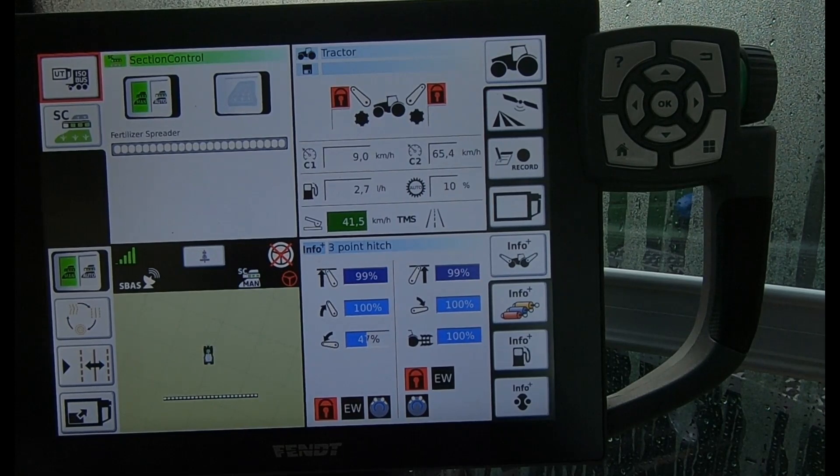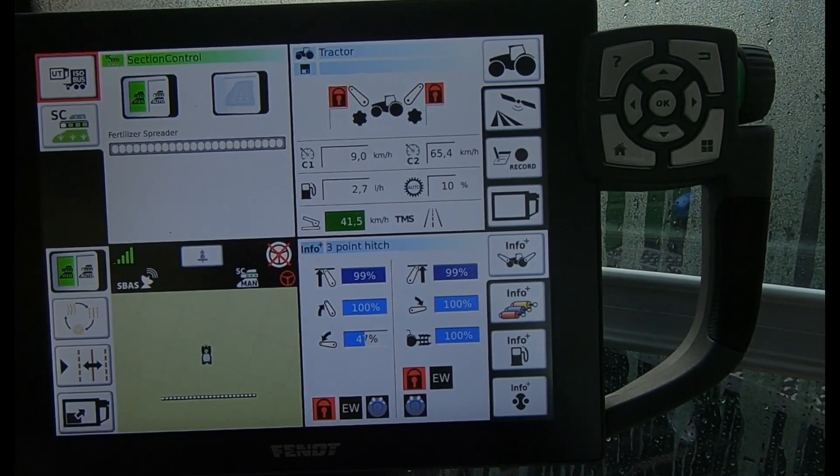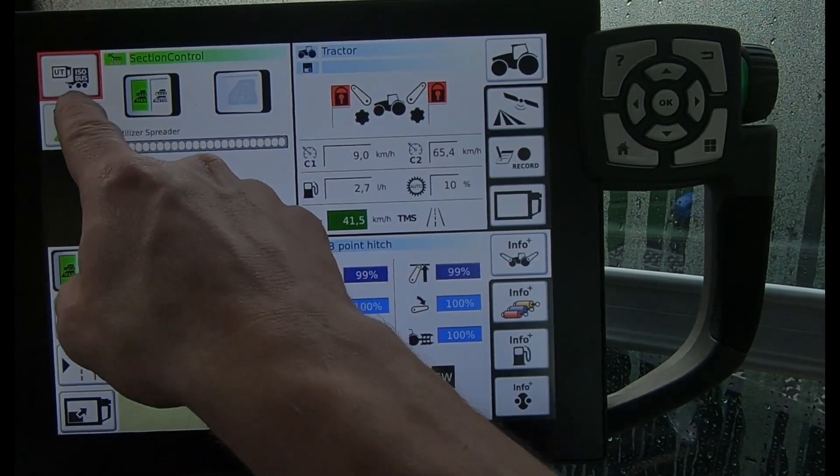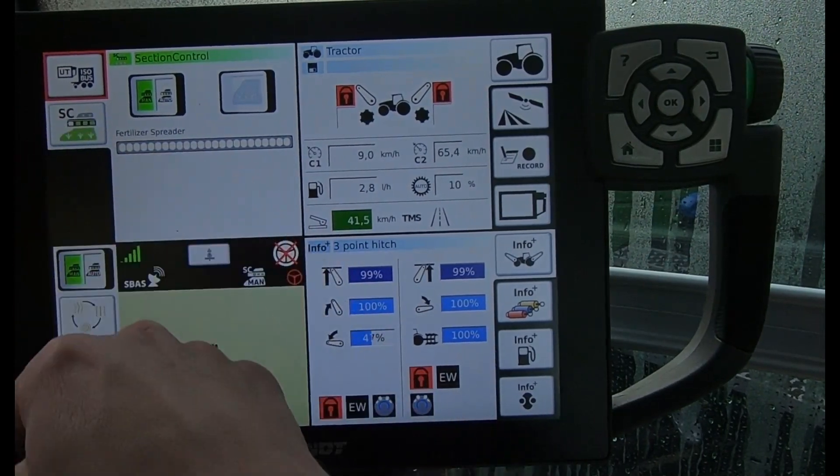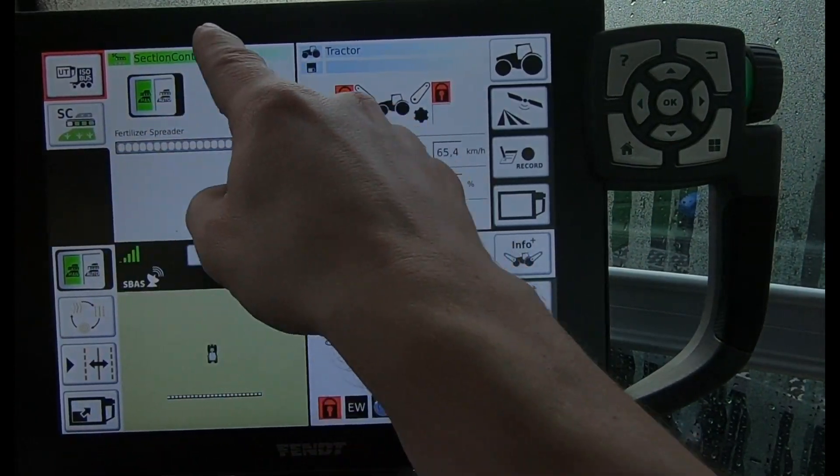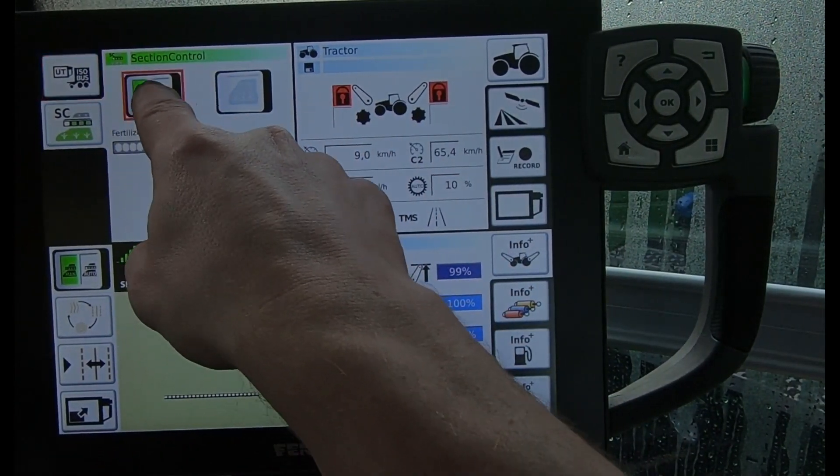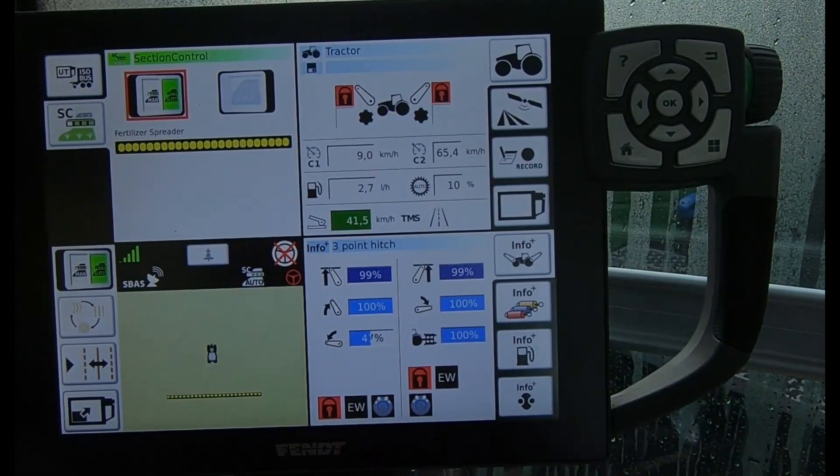When we've got a nice bus implement on and the screen is unlocked to do section control, we'll have this section control button here. On this overview we've either got manual or auto, so now in auto.